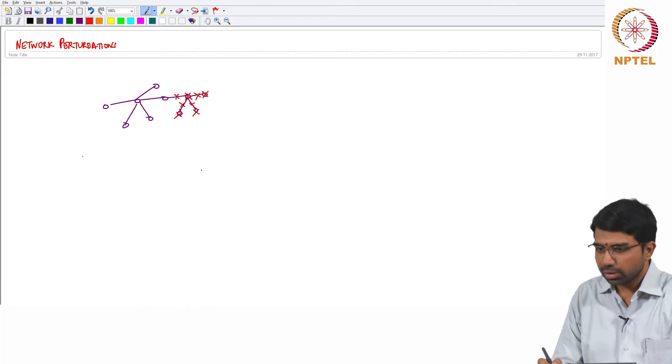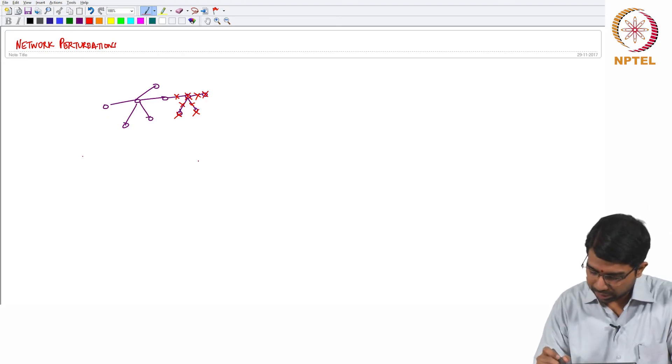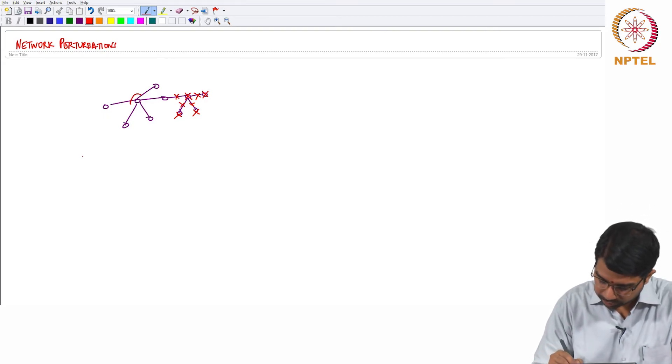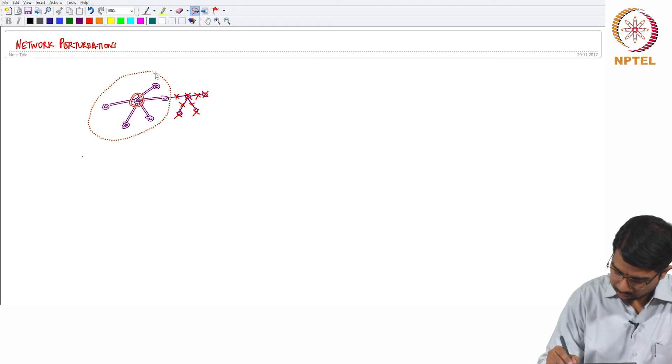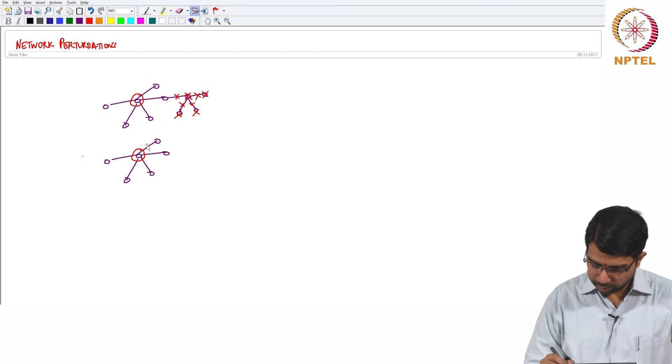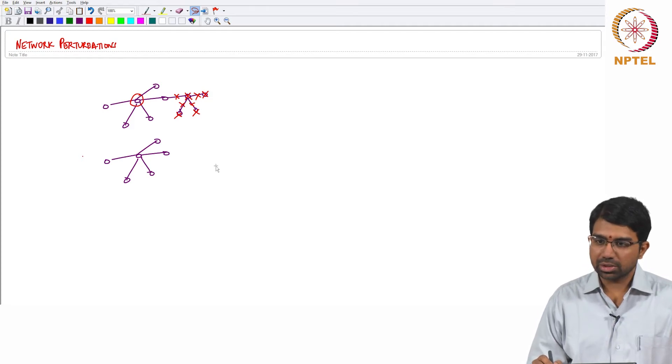But what happens when you duplicate something, when you duplicate an edge or duplicate a node? Let's say you duplicate this node. What will happen is something quite interesting. You have now duplicated that node.